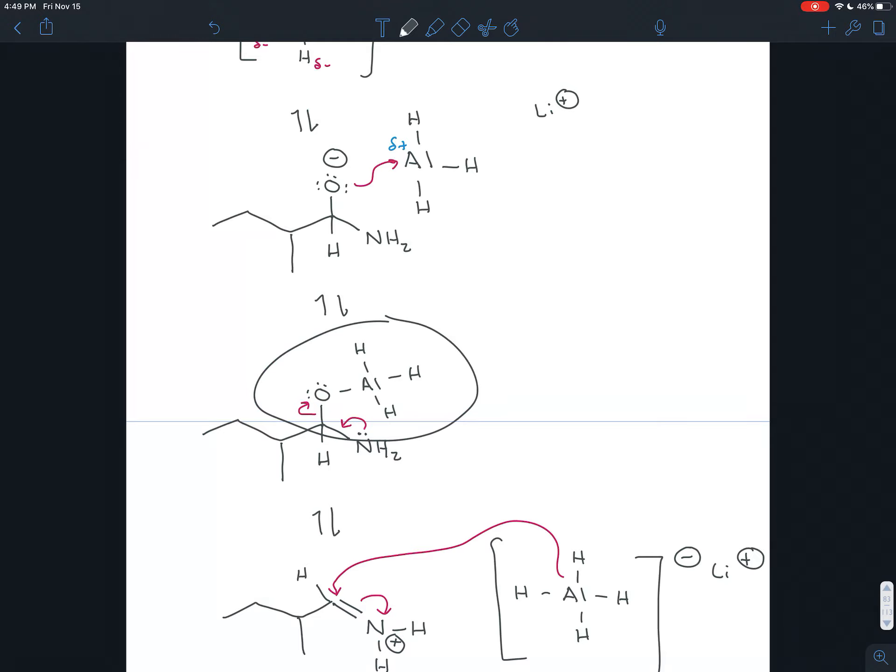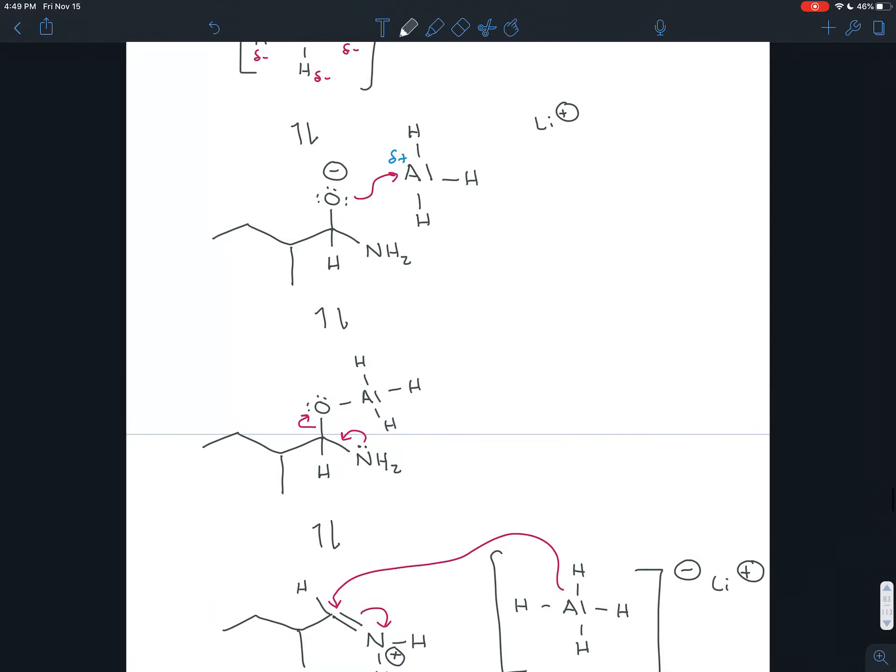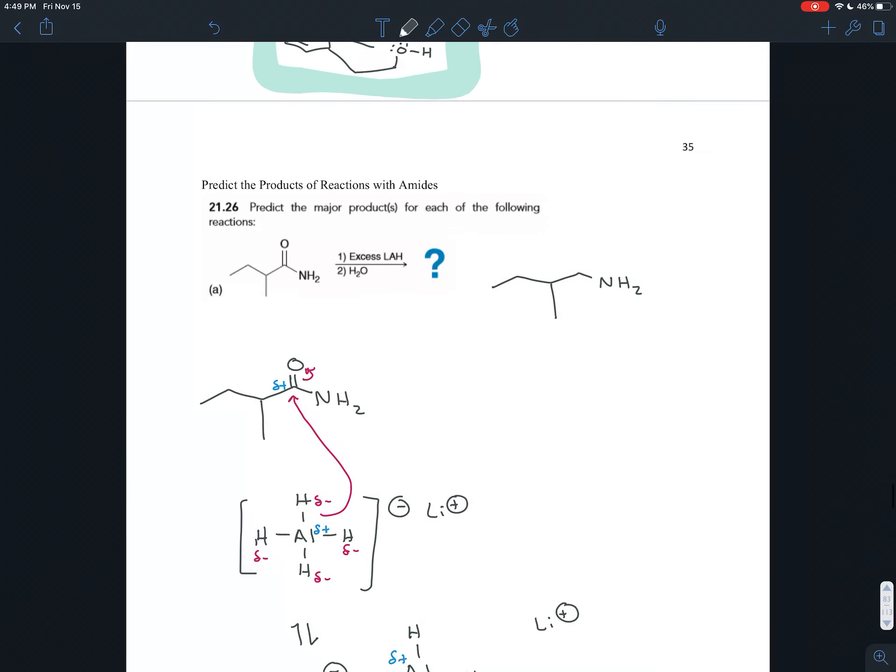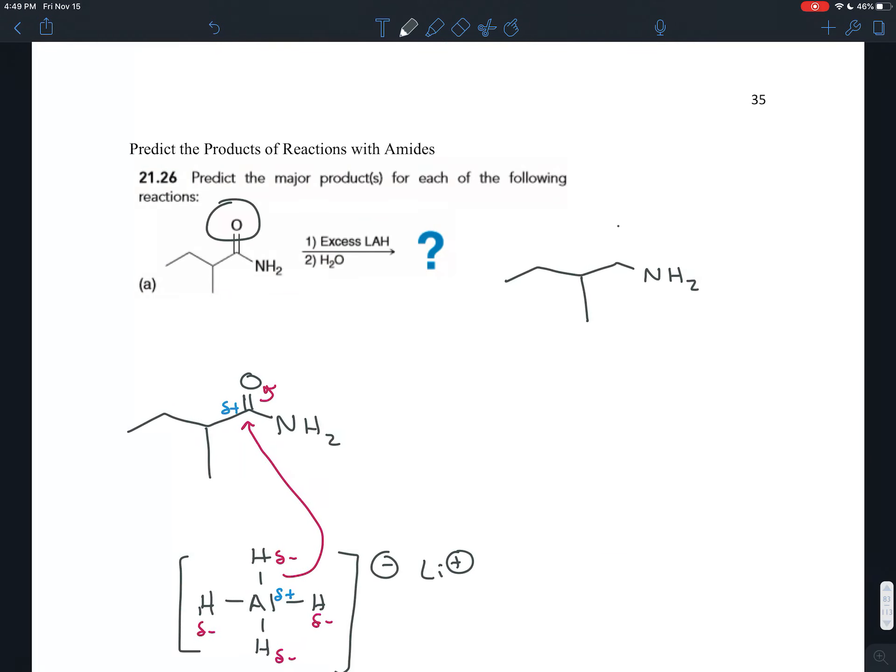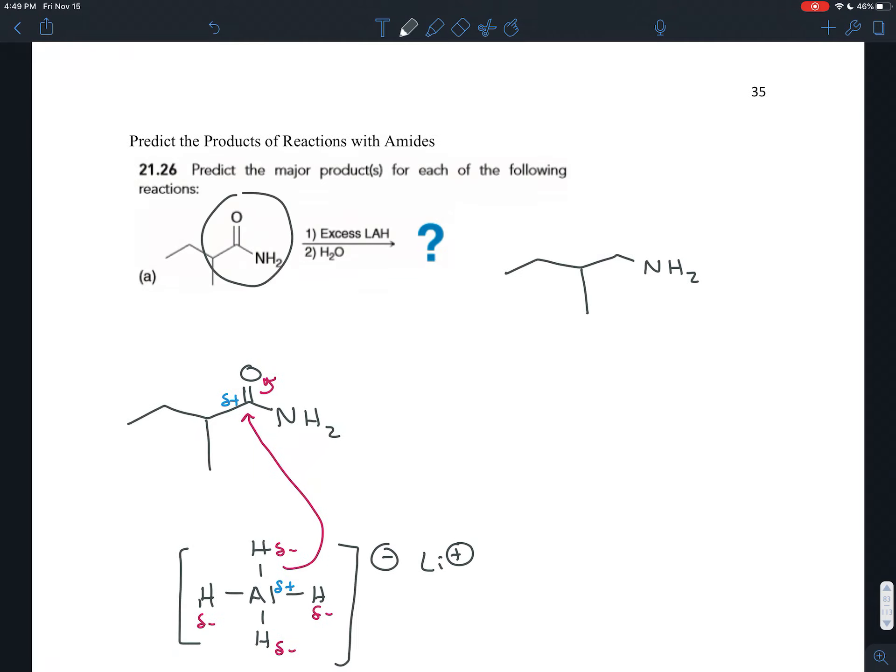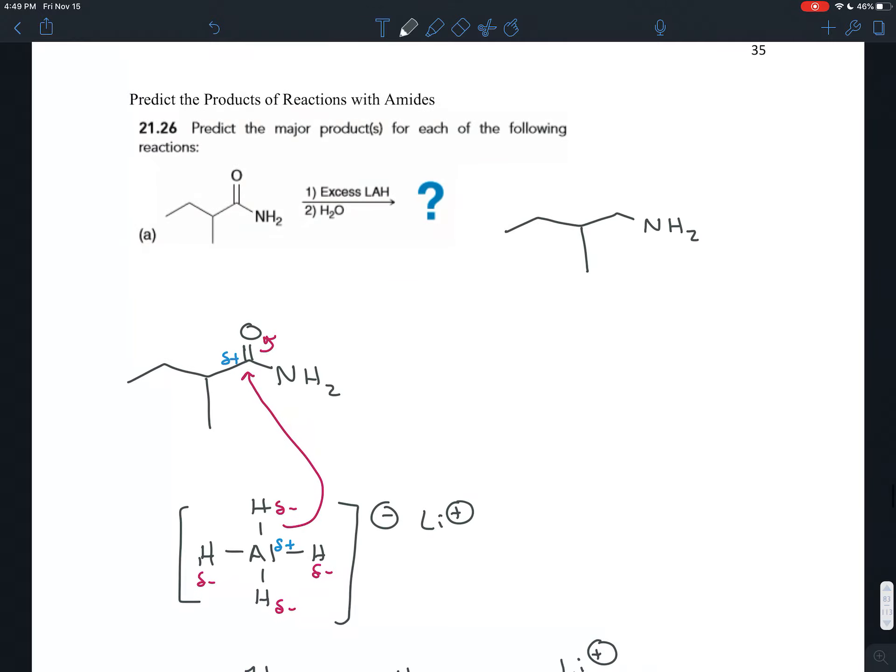So there is this sort of interesting and strange step where the lithium aluminum hydride bonds to the oxygen and altogether they act as a leaving group. And that's how the oxygen ultimately leaves in this reaction. So if you take an amide and you treat it with excess lithium aluminum hydride followed by the water, you end up getting this amine.